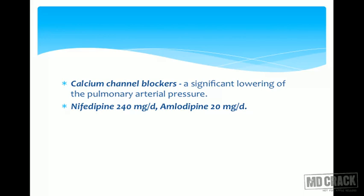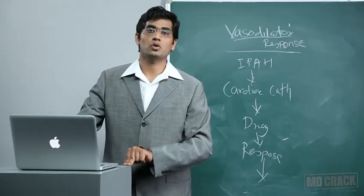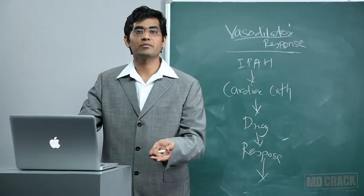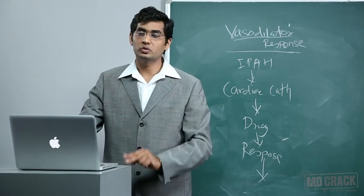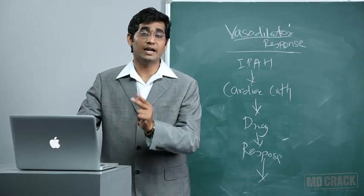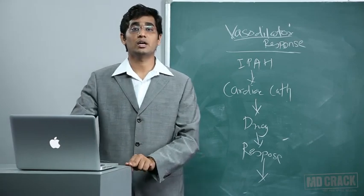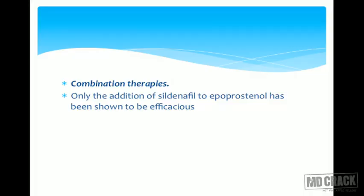Calcium channel blocker doses in pulmonary hypertension must be much higher than those used in systemic hypertension. Nifedipine should be 240 mg per day and amlodipine should be at least 20 mg per day — not the routine 5 mg BD dose used for systemic hypertension. Combination therapy, such as sildenafil with epoprostenol, has shown good effects.